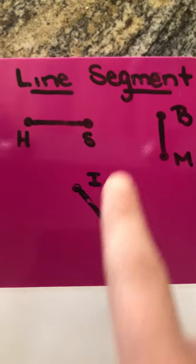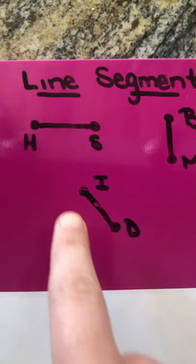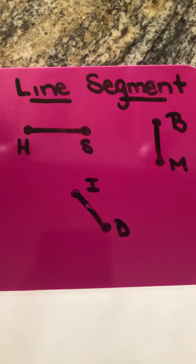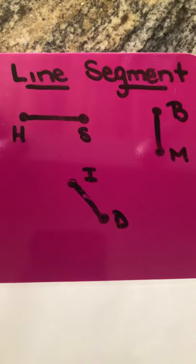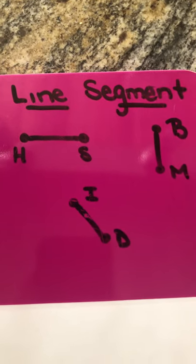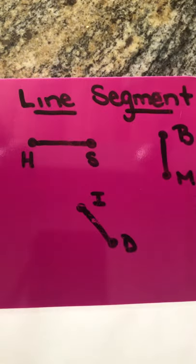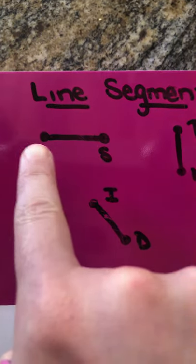But instead of arrows, line segments have those two dots or two end points. So we really want to make sure we utilize our math vocabulary. So they have two end points. Those two end points mean they stop. So this isn't going on and on forever. This is it. Those end points mean done, stops.